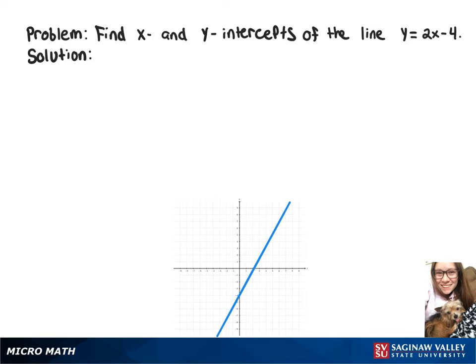We want to find the intercepts of the line y equals 2x minus 4, so we'll start by finding the x-intercept. To do that, we're going to substitute 0 for y, which gives us 0 equals 2x minus 4.